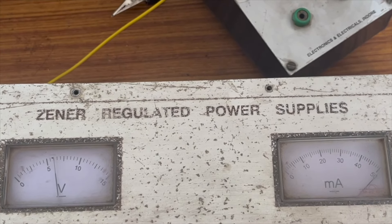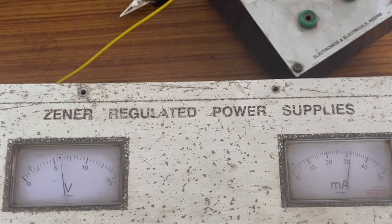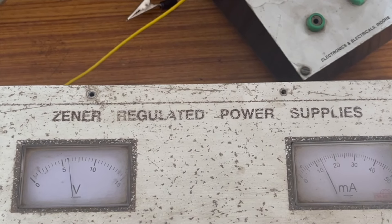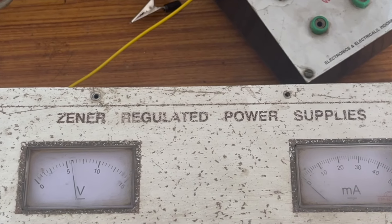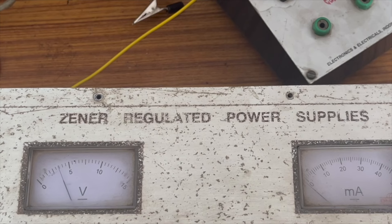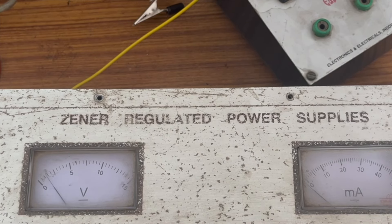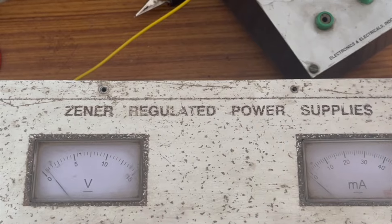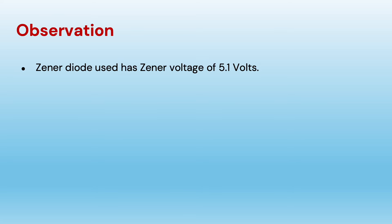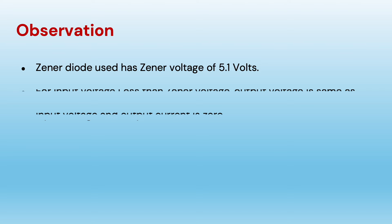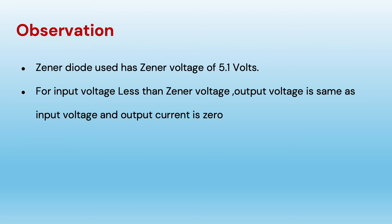When we reduce the voltage, it reduces down to 5 volts, and as we go below 5 volts, the current becomes 0 and the voltage follows the input voltage. This is how zener diode works. We have observed that the zener diode worked as a voltage regulator with a zener voltage of 5.1 volts. For input voltage less than 5.1 volts, output voltage is the same as input voltage and output current is 0.